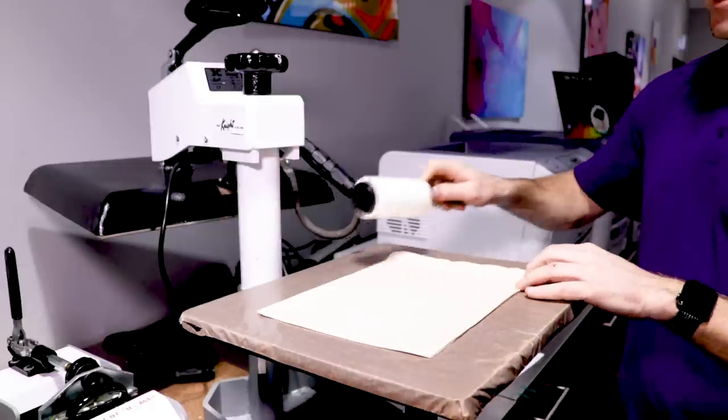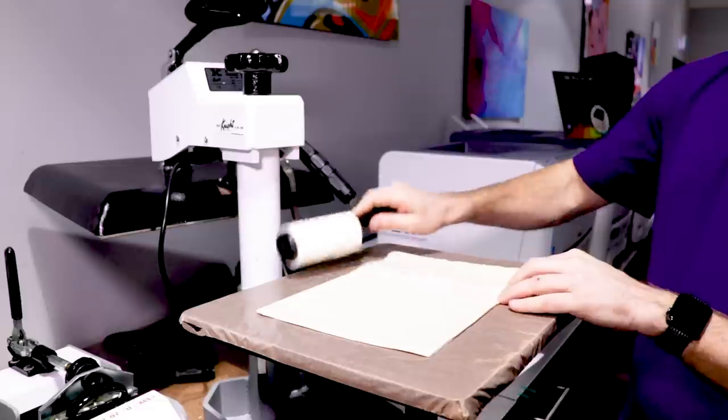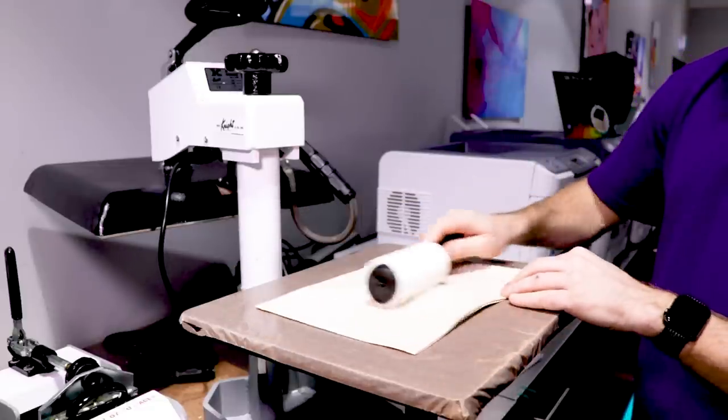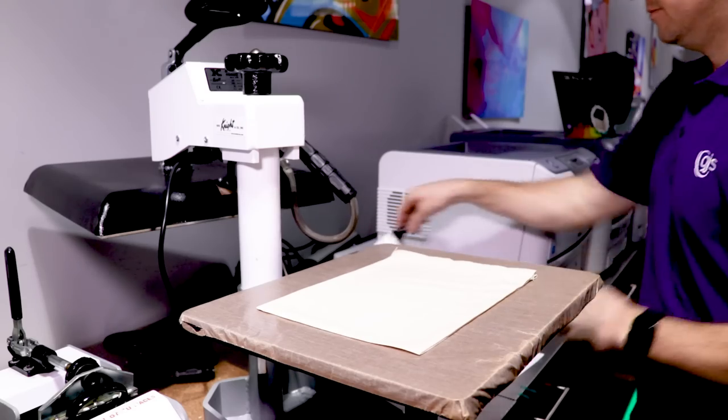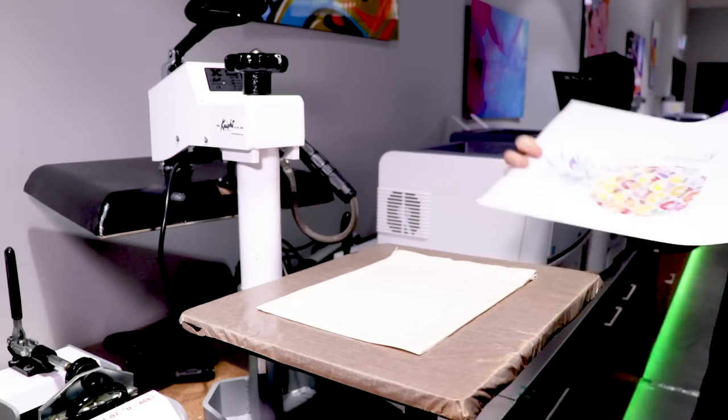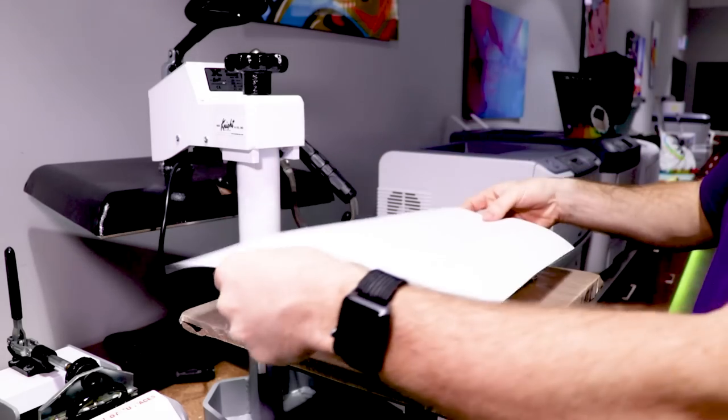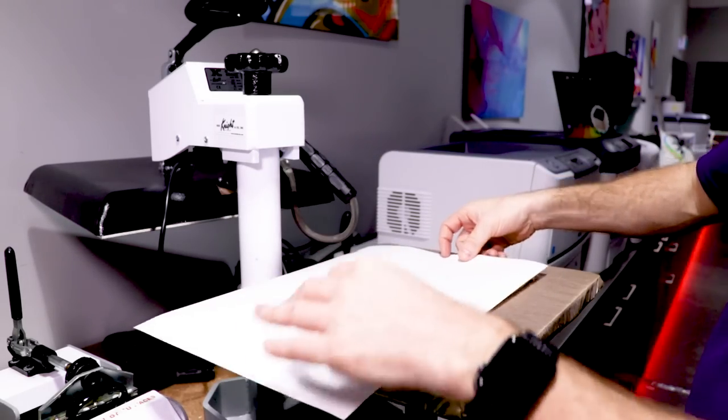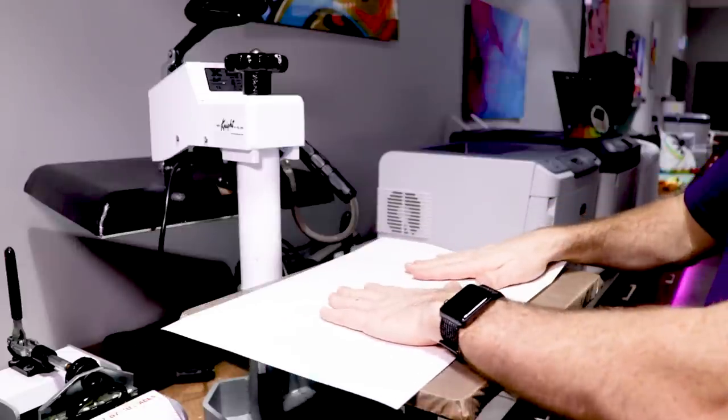Use a lint roller to remove any excess fibers from the surface of the bag, and then place the printed transfer face down on the bag. If you wish, you can secure it in position.